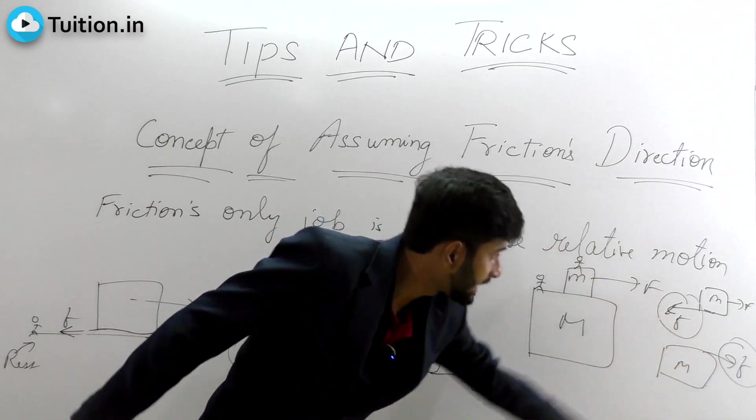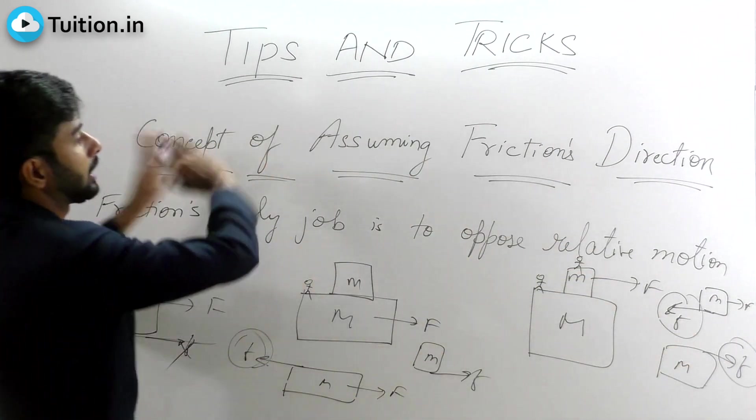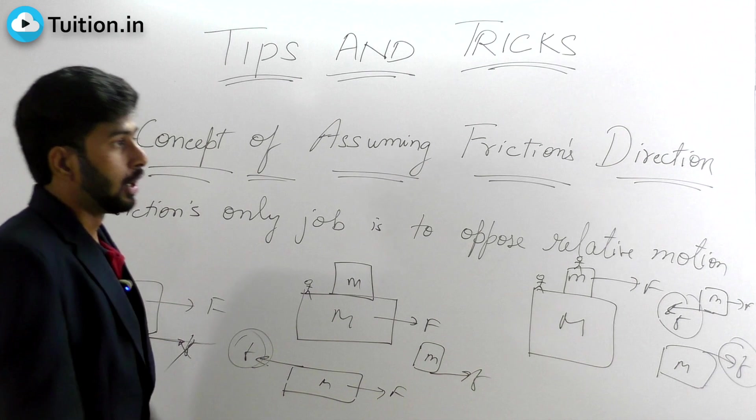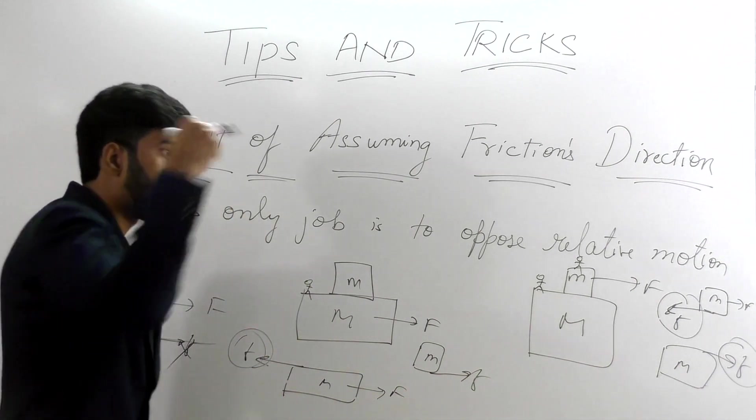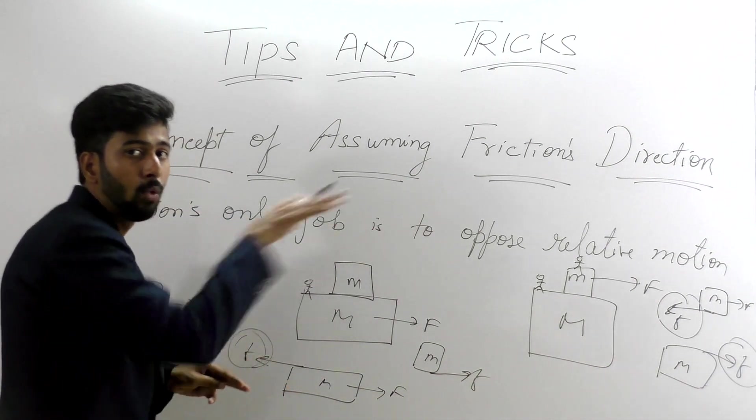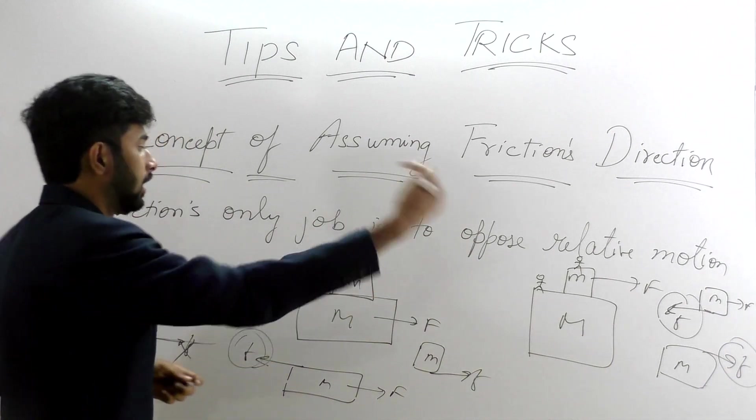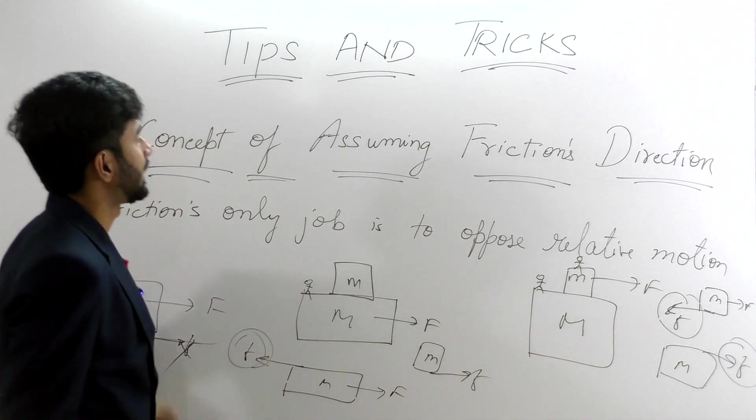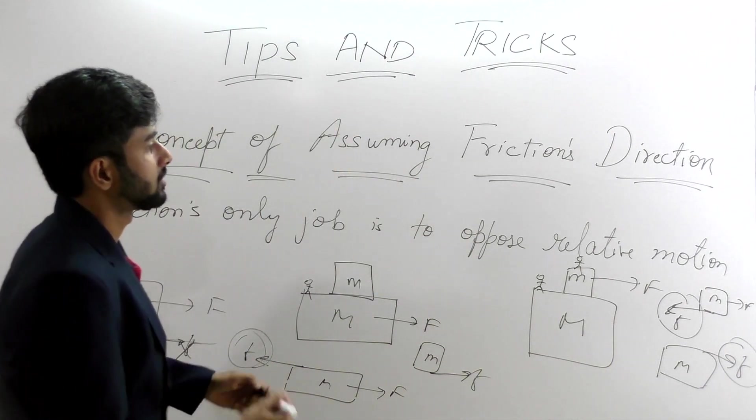Now whether this gets right or left depends upon this particular intuition that I gave you: stand on the other body, look how the second body is behaving or how it's moving, and oppose the movement with the relevant direction for friction. That's how you assume the friction's direction. That's the concept or the intuition behind it.